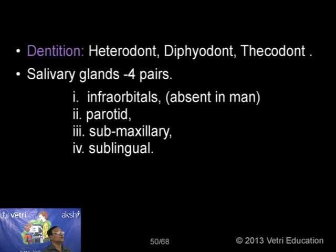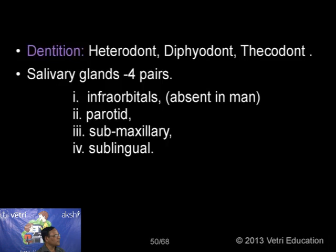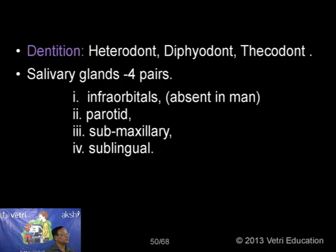There are four pairs of salivary glands in mammals. They are: the parotid — the largest salivary gland; the submaxillary, also called submandibular; the sublingual, just below the tongue; and the fourth — infra-orbital, present just below the orbit of the eye. The salivary gland absent in humans is the infra-orbital. In rabbits we have all four pairs of salivary glands, but in humans we have only three pairs.